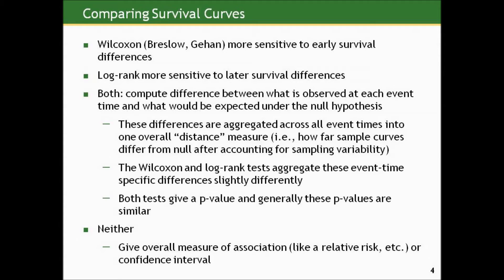One overall measure of how far the sample curves differ from what would be expected under the null, accounting for sampling variability. So basically how far our result is compared to what we'd expect under the null, taking sampling variability into account — just a more complicated measure of discrepancies since it's been aggregated across multiple points. The Wilcoxon and log-rank tests aggregate these event-time-specific differences slightly differently — that's the difference in approach.